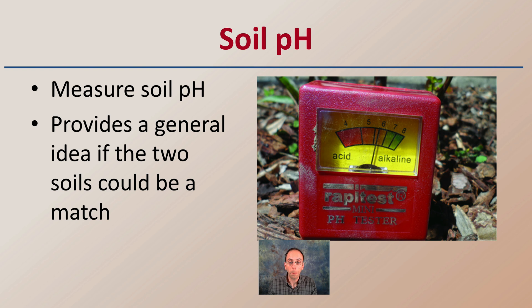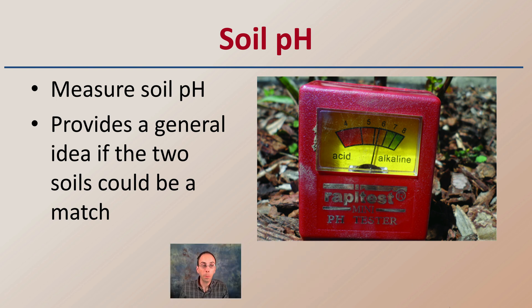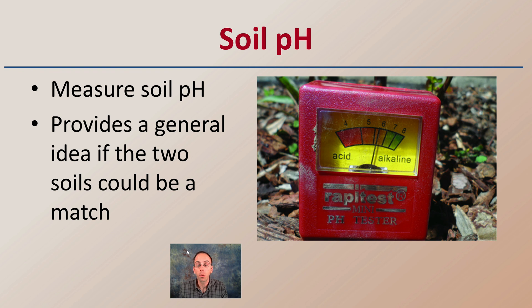There's also soil pH, which is very important if you're looking at growing plants, and also useful forensically. Knowing the pH can provide a general idea of whether two soils could be a match — whether one is really acidic, really basic, or neutral. An unusual soil pH might indicate that limestone or potash was added to it, which can vastly affect the pH compared to the native soil.